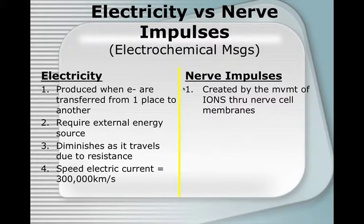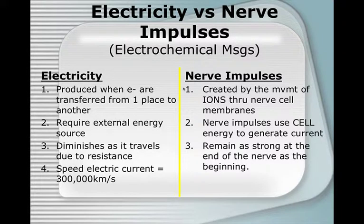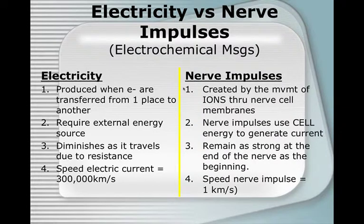Nerve impulses are created by the movement of ions through nerve cell membranes — not a transfer of electrons. Nerve impulses use cell energy to generate the current, so no external energy source. They remain as strong at the beginning and the end of the impulse. Nerve impulse speed is around one kilometer per second — a lot slower than electricity.